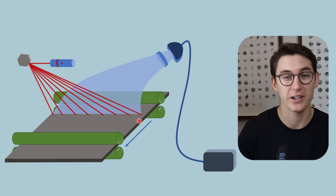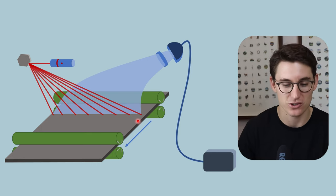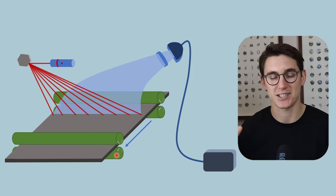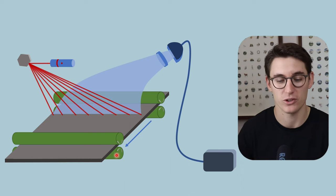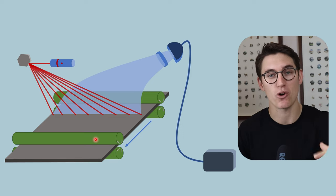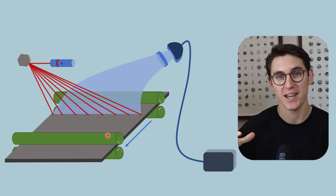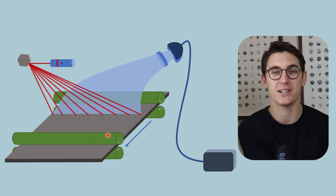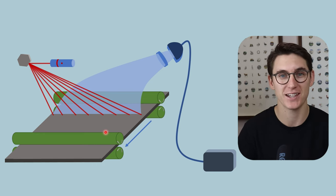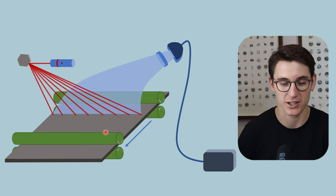The computed radiograph can actually be read out multiple times — not all F-centers are released on the first scan, so each time we read it out the signal gets slightly less. We can read this two to three times before losing all of those F-centers. If we want to clear the cassette completely, we shine a bright white light onto it, releasing all electrons from the F-centers so the cassette can be reused. It is important to clear the cassette before taking another radiograph, otherwise we'll get a superimposed image of both radiographs.